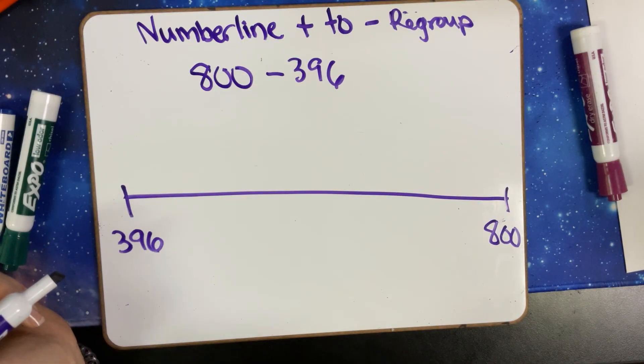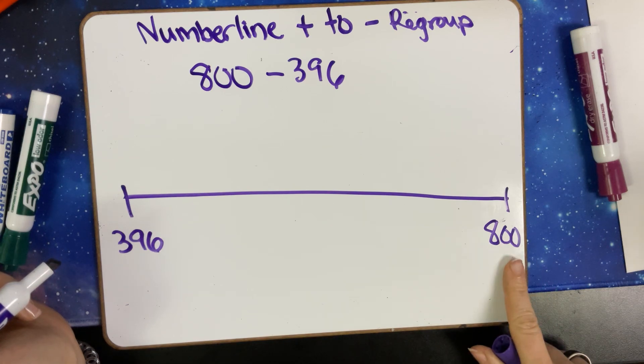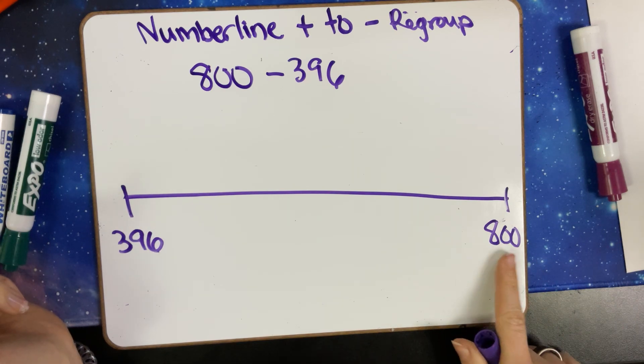The same as without regrouping, I'm just looking to match these place values with the same digits.